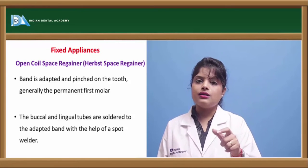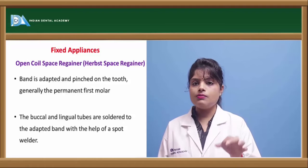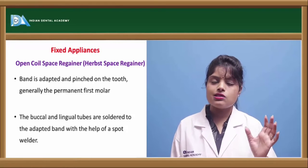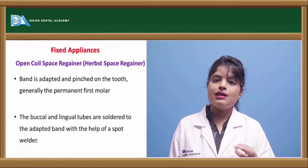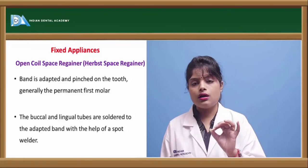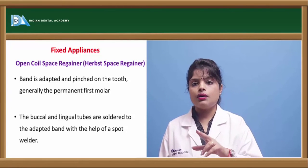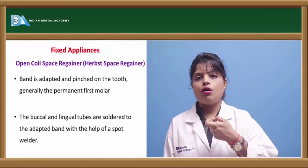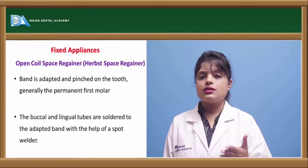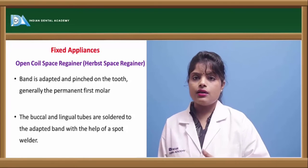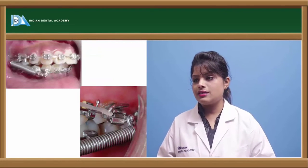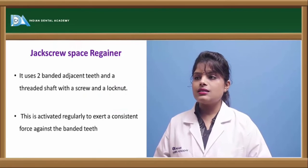For the open coil space regainer, a band is fitted onto the permanent molar adjacent to the space. Prefabricated molar bands are placed, and a buccal tube is soldered onto the buccal side of the band. A coil or wire is then inserted into the buccal tube and adapted to the distal surface of the adjacent teeth. After activation, this completes the open coil space regaining procedure.